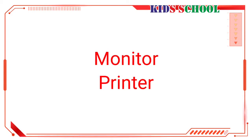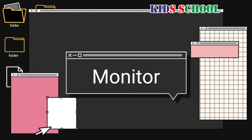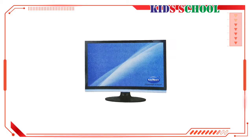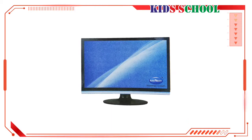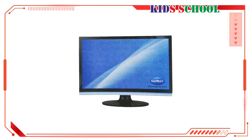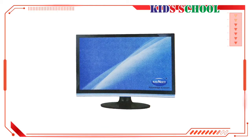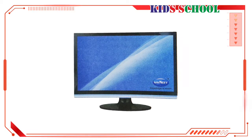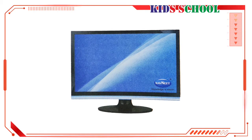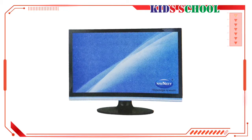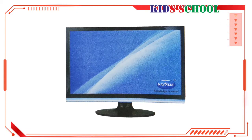Dear students, the monitor and the printer are two output devices. The monitor displays the output while a printer prints the output on paper. The monitor looks like a TV screen. It is connected to the CPU box with a cable. It has a power button to switch it on and off, and it also has controls for brightness, contrast, etc. The monitor is also known as Visual Display Unit, or VDU.